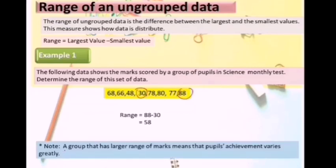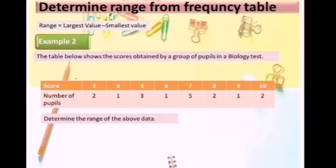Note: a group that has a larger range of marks means that pupil achievement varies greatly. Now we are going to learn how to determine the range from a frequency table.